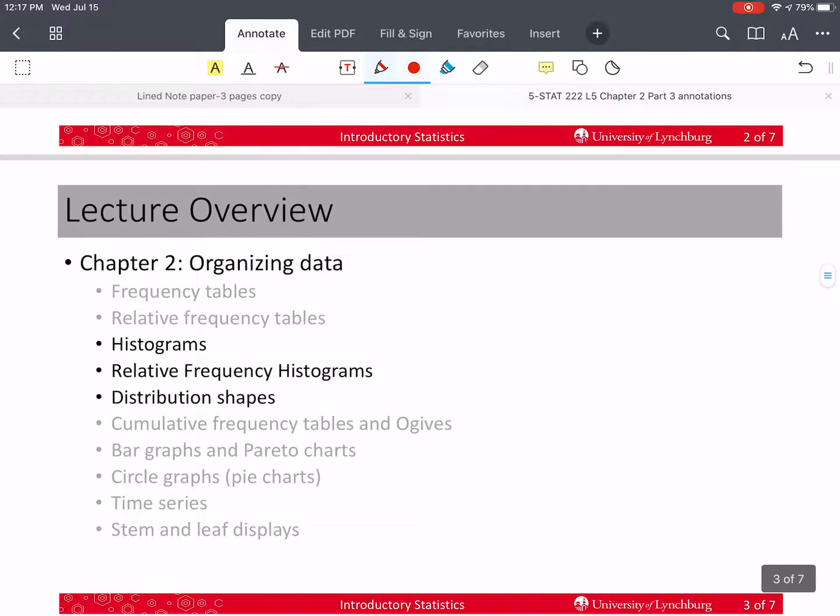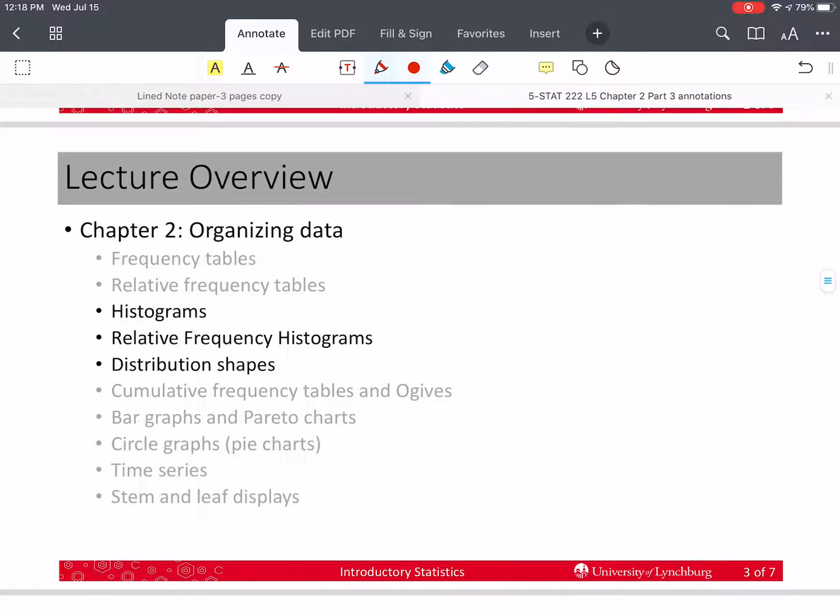So this time we're going to cover histograms. We're going to make a histogram using the frequency table and a relative frequency histogram using the relative frequency table. And then we're going to talk briefly about the different shapes that distributions have.